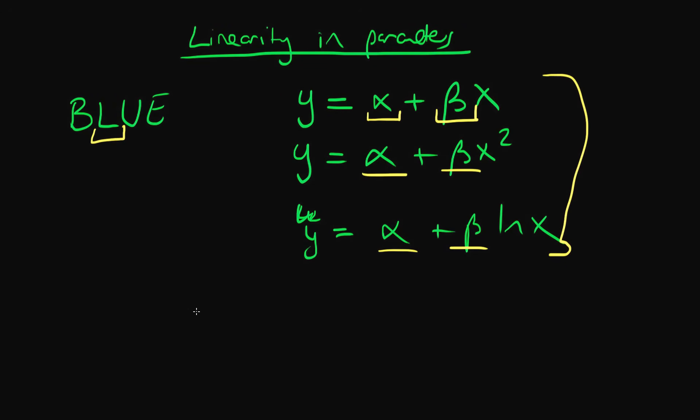An example of a model that wouldn't be fine to estimate via least squares would be something like Y equals X plus alpha all squared. And the reason that wouldn't be fine to estimate via least squares is because if I expand this parenthesis I'd get Y equals X squared plus 2 alpha X plus alpha squared. And note that now I've got a non-linearity in my parameter alpha, so this wouldn't be okay to estimate via least squares.